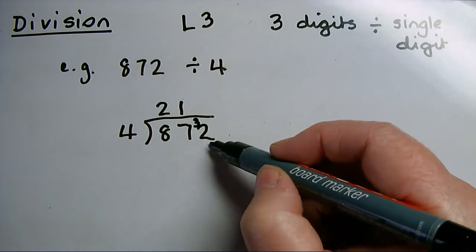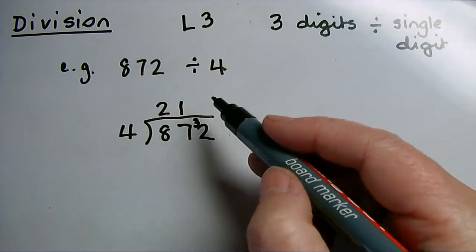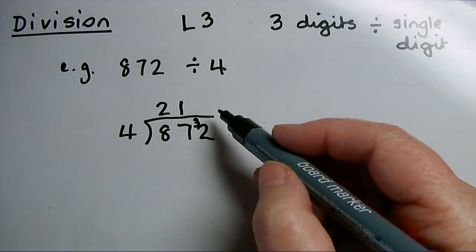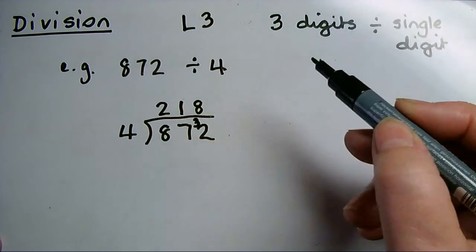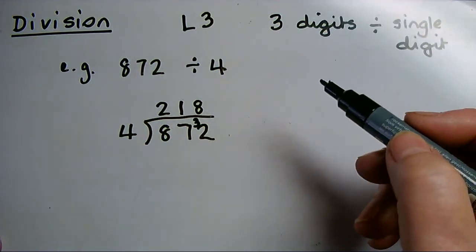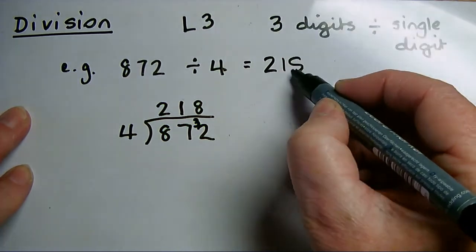That now makes units of 32. How many 4s in 32? Using my times tables, I know that how many 4s in 32 is 8, and there's no remainder. So the answer to my division sum is 218.